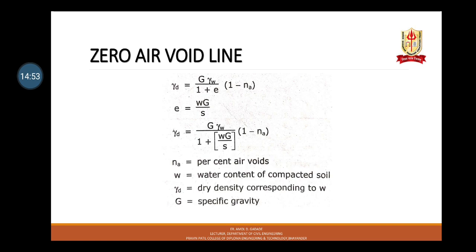Moving further to the zero air void line. The line which shows the relation between water content and dry density for compacted soil having a constant percentage of air void is known as the air void line. It can be estimated from the relationship: gamma_D = G·gamma_W / (1 + e) · (1 − NA), where e = WG/S, NA is percent air void, W is water content of compacted soil, gamma_D is dry density corresponding to W, and G is specific gravity.